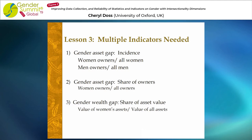The third lesson is that multiple indicators are needed. The first is the gender asset gap as an incidence measure — looking at the proportion of women owners out of all women, what proportion own a particular type of asset, compared to men. The second is a gender asset gap looking at the share of owners: of all the people who own this type of asset, what proportion are women? In both of these, we're simply looking at whether the individual is an owner without thinking about how much they own. Third, we also want to look at the gender wealth gap — the share of asset value owned by women, looking at the value of assets owned by women as a share of the value of all assets.